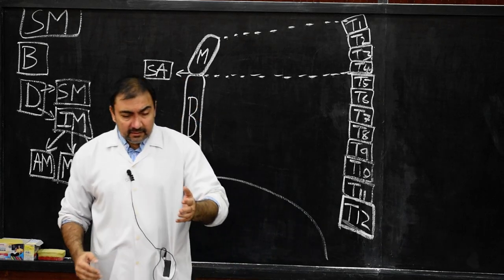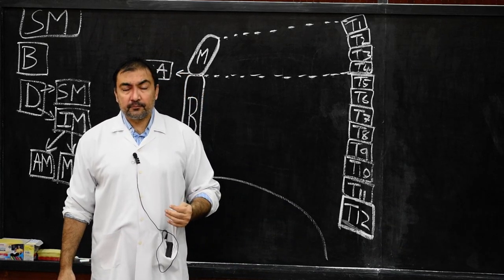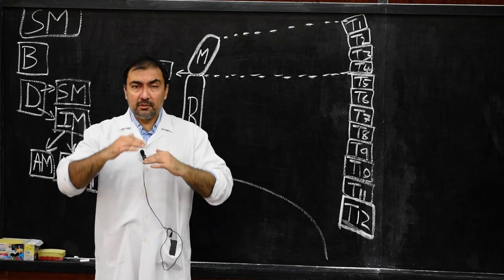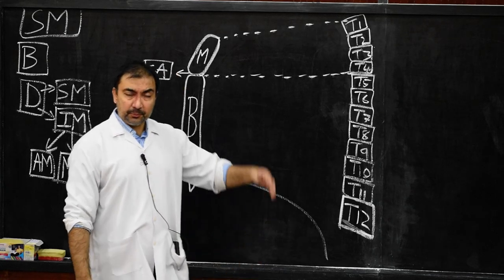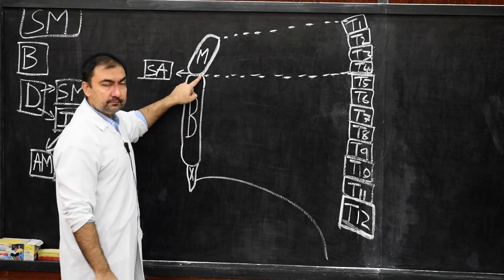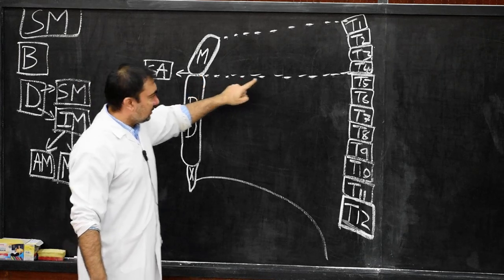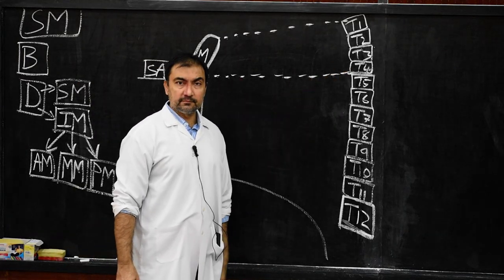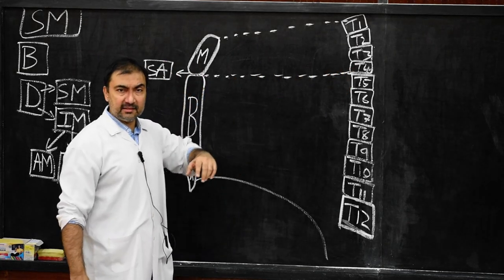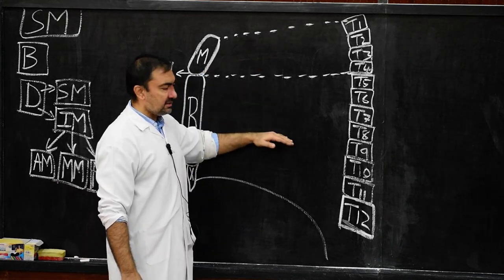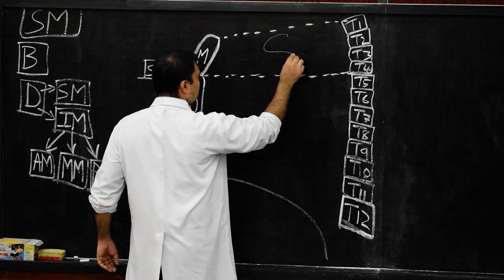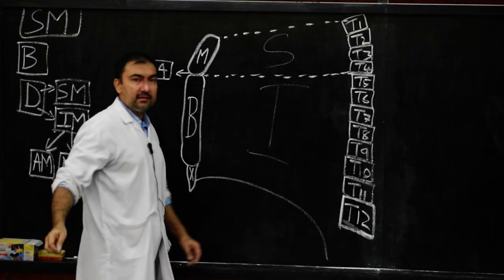This mediastinum will be divided into two basic subdivisions — superior and inferior mediastinum — by a transverse horizontal line extending from the sternal angle to the lower border of T4. As this imaginary transverse line passes from the sternal angle to the lower border of T4, it divides the entire mediastinum into superior mediastinum and inferior mediastinum.